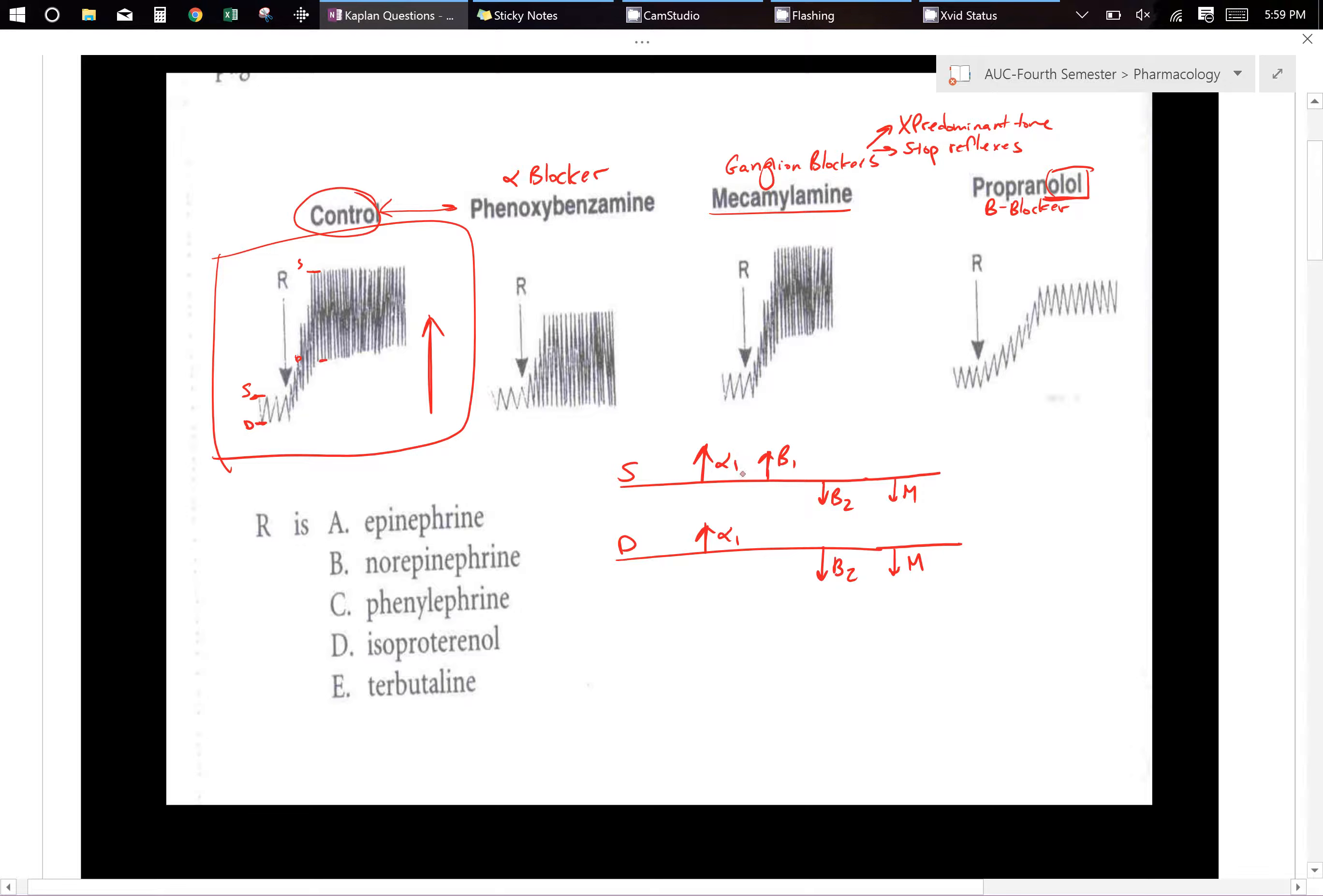And we notice right away that when we put an alpha blocker on it, when we give an alpha blocker, all of a sudden this whole entire thing shifts down. So obviously we have to know that there is some alpha effect going on. But what's this other thing over here? So what is that?